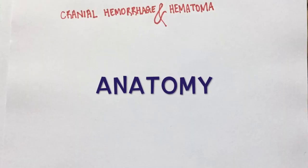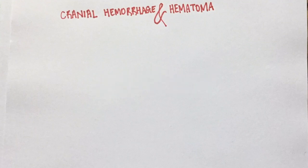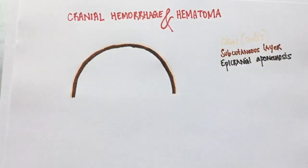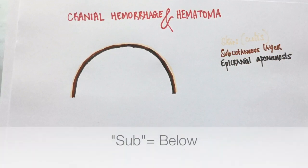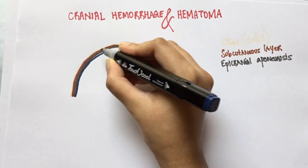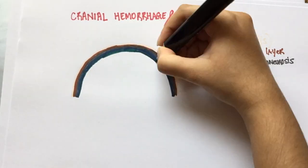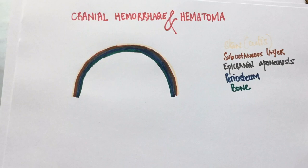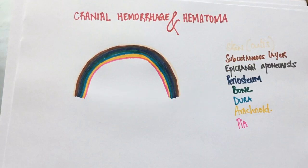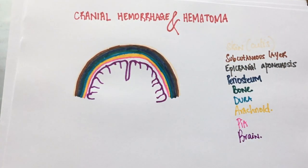Let's first take a look at the anatomy so that pathologies become much easier. A human head has many layers from the skin to the brain. Right below the skin is the subcutaneous layer. Below that, we have fibrous tissues called the epicranial aponeurosis. Epi means on top, so epicranial aponeurosis is on top of the cranium. Like other bones, the outer part of the cranium is the periosteum. The dura, arachnoid, and pia are the three layers of the meninges. Finally, this purple structure is our brain.